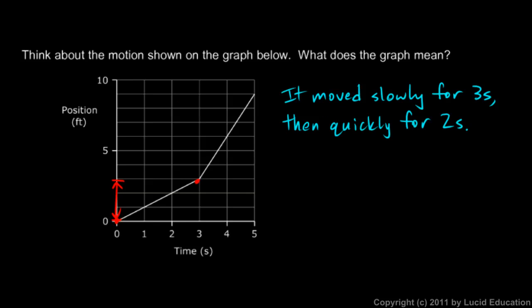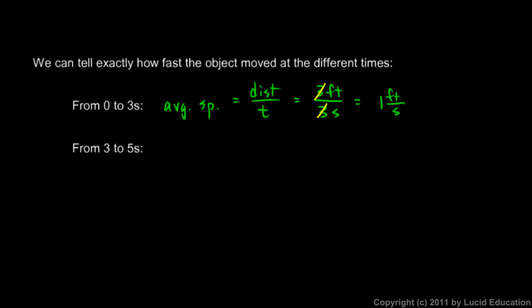Now look back at the graph. From three to five seconds, that's this time interval. At three seconds it was right there, at five seconds it was right there. So it went from three to nine. And as we said earlier, that distance is six feet during this time of two seconds. We'll use those numbers here.